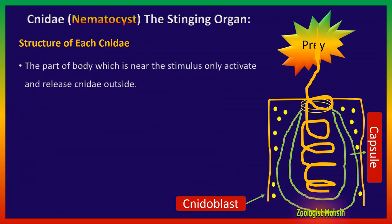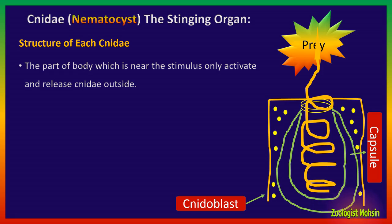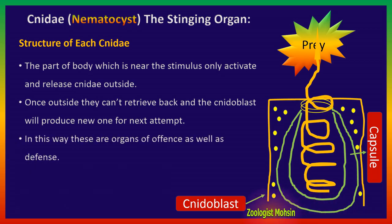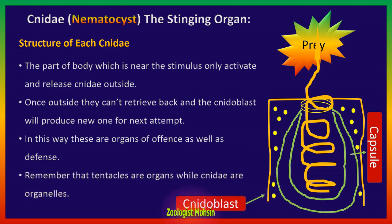The part of the body which is near the stimulus is the only part that activates and releases Cnidae. Other parts not directly in contact with the prey are not activated — only the stimulated part is activated. Once released outside, they cannot be retrieved, and the cnidoblast will produce a new one for the next attempt. In this way, these are organs of offense as well as defense. Remember that tentacles are organs, while Cnidae are organelles.